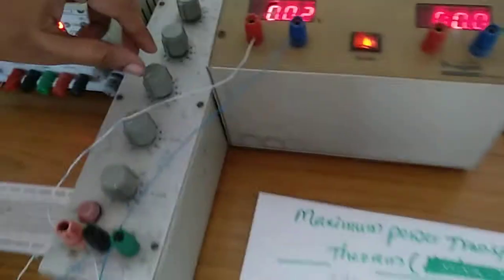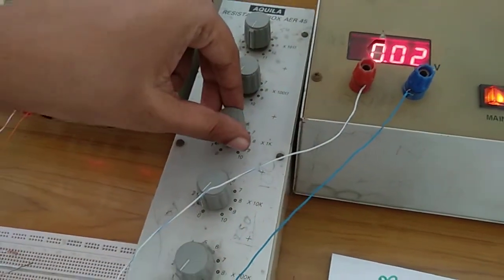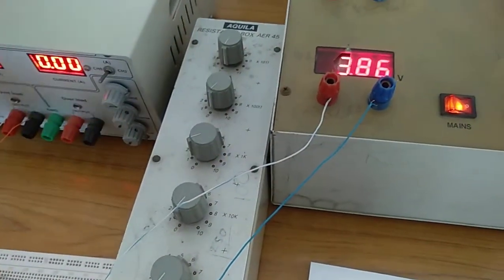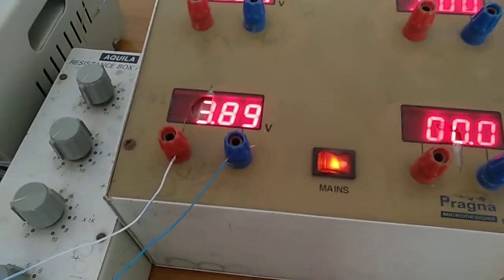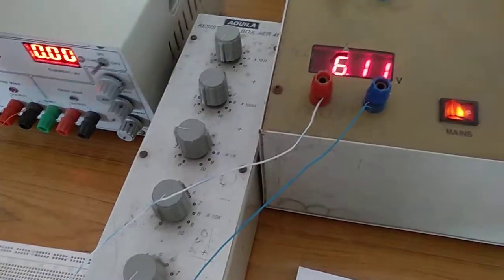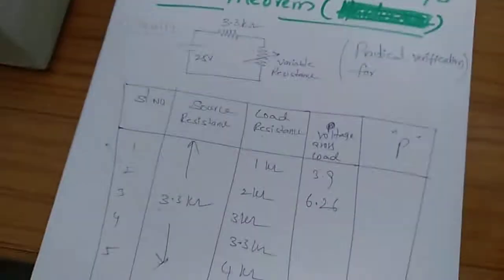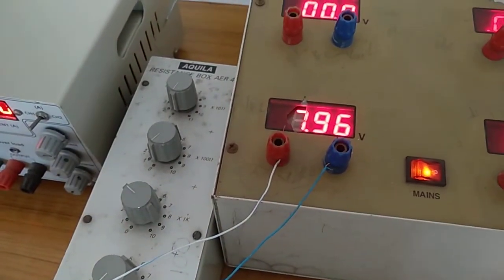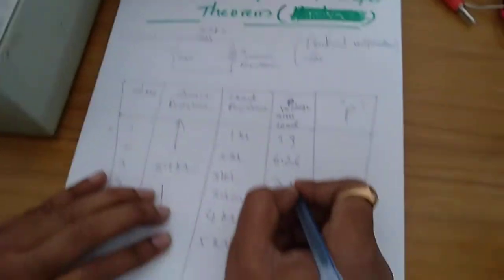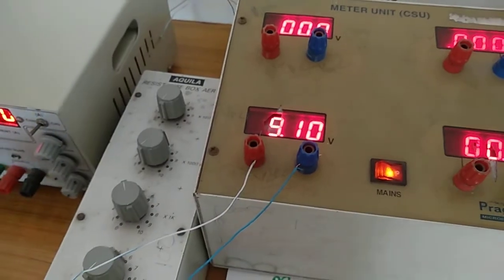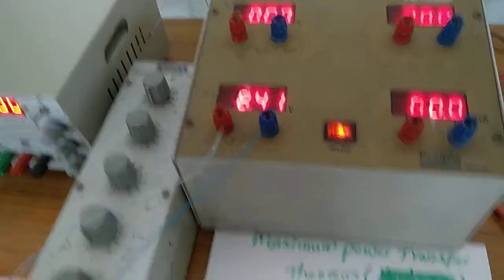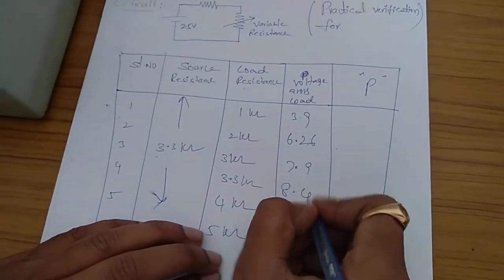So now I am applying variable load resistance equal to 1 kilo ohm. When it is 1 kilo ohm, the voltage across the load is 3.9 volts. When it is 2 kilo ohms, it is 6.26 volts. When load resistance equals 3 kilo ohms, it is 8.4 volts.